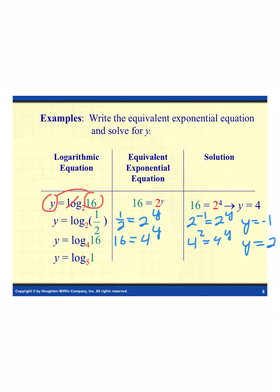For the last example, following the same pattern, I take my base, raise it to the y power, and it equals the value I'm evaluating. So I have 1 equals 5 to the y. The only way this is possible is if y equals 0, because anything raised to the 0 power equals 1 — so 5 to the 0 power equals 1.